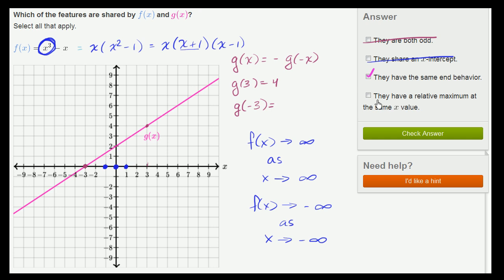Now, the last option is they have a relative maximum at the same x value. So we have to think about what the maximum points are. Well, actually, we already know that this is not true, because g(x) has no relative maximum points. In order to have a maximum point, you would have to do something like this. This right over here would be a relative maximum, or you could say a local maximum point.